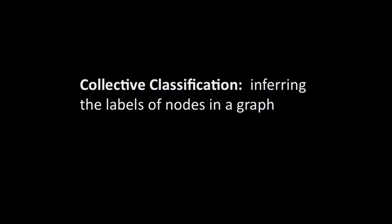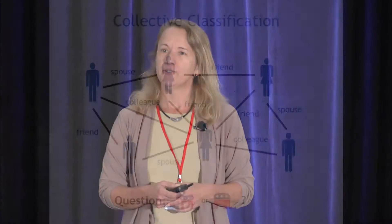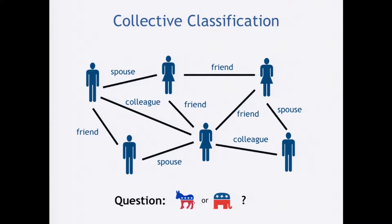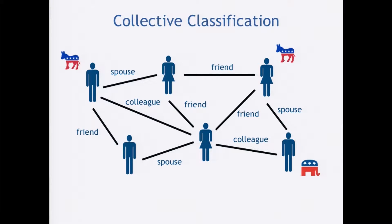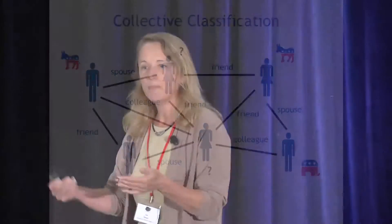The first pattern is collective classification — the simple idea of inferring labels for nodes in a graph. Here's my social network: I have all kinds of links, and I want to label the nodes with their political persuasion. Usually I have some nodes already labeled and some with question marks, and I want to infer these unknown labels in a smart way. It's probably the simplest problem on a graph — even simpler than PageRank — just label the nodes.